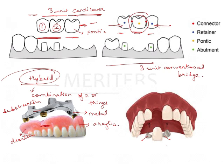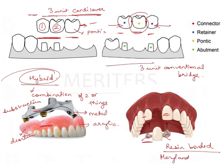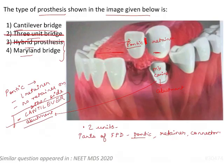Maryland bridges use macro-mechanical bonding and are resin-bonded with two thin metal retainers. They are very peculiar in their configuration — small wing-like retainers that cover the adjacent teeth. A maryland can also be a cantilever; if there is only one wing it becomes a cantilever maryland. So the concept of cantilever is clearly different from the other options, and the given image is that of a cantilever bridge.